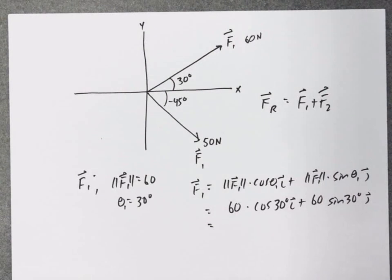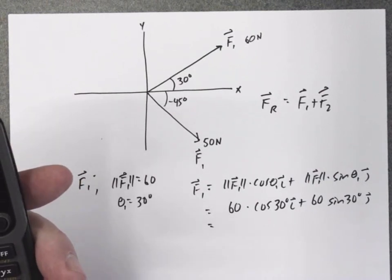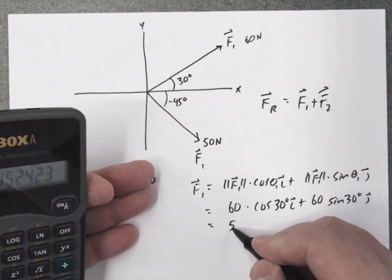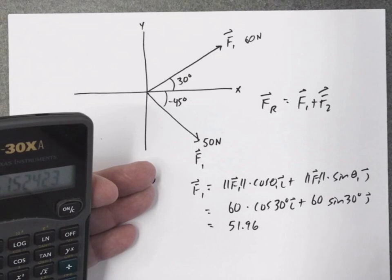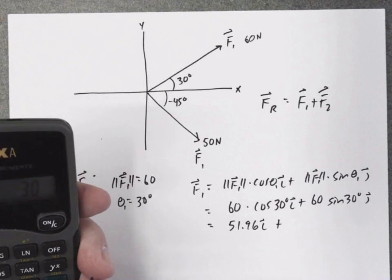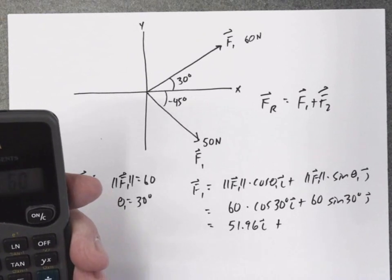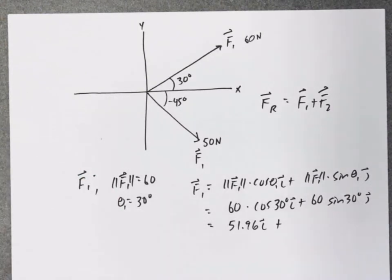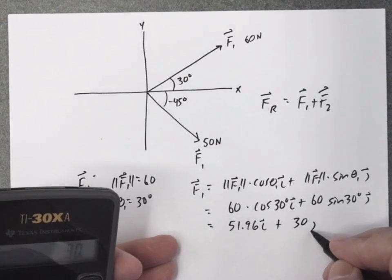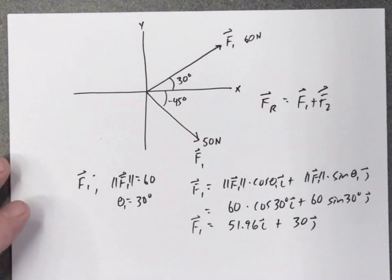So you grab your calculator, make sure you're in the degree mode. 30, cosine of 30, cosine of 60, 51.96, that's the I part. Then 30 degrees, the sine, times 60, equals 30, J. So there's the F1 force vector.